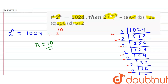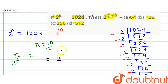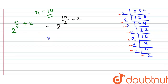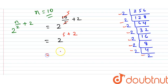Now we find the value of 2 to the power n by 2 plus 2. Substituting n equals 10, this becomes 2 to the power 10 by 2 plus 2. Since 10 divided by 2 is 5, this simplifies to 2 to the power 5 plus 2, which is 2 to the power 7.